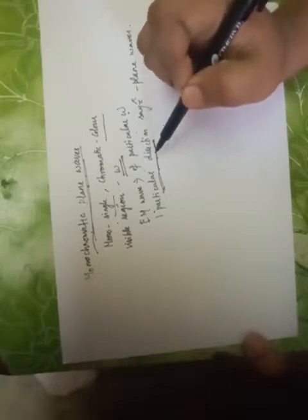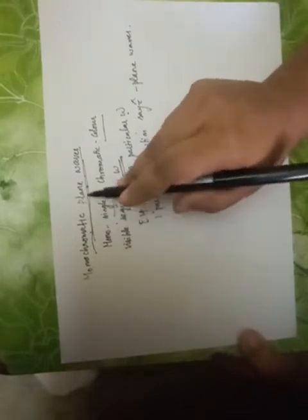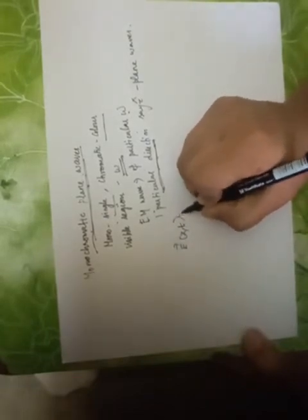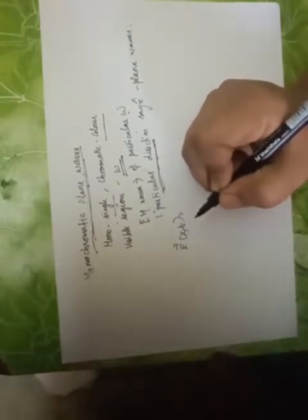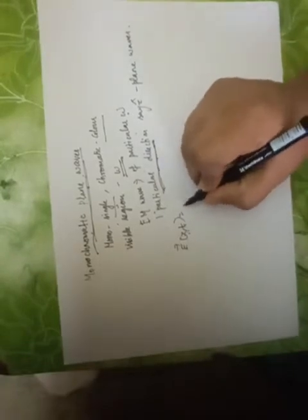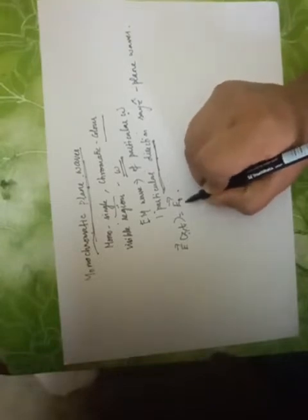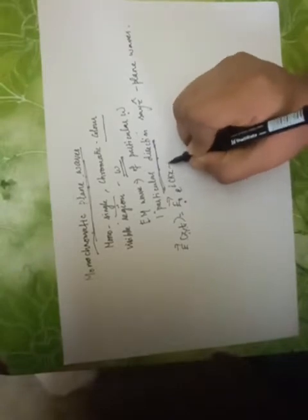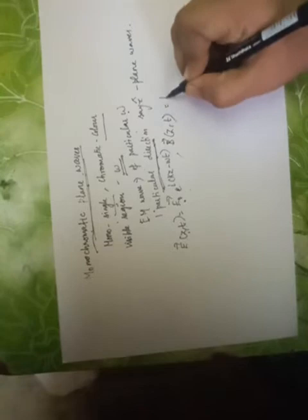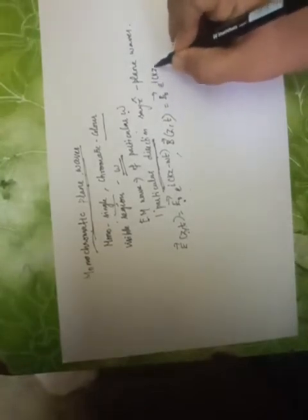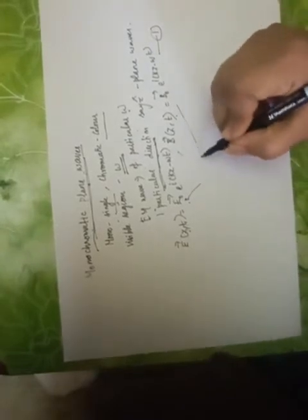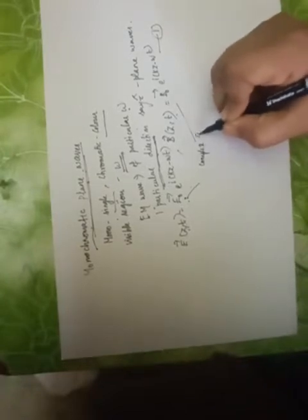Now we are going to write the electric field and magnetic field of such monochromatic plane waves. The electric field is given by E which is a function of z and t, equal to E naught times e^(ikz - ωt). Similarly, the magnetic field B(z, t) is equal to B naught e^(ikz - ωt). Here E naught and B naught are the complex amplitudes.